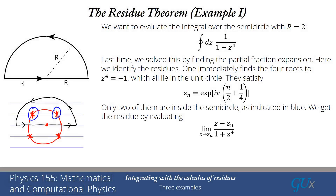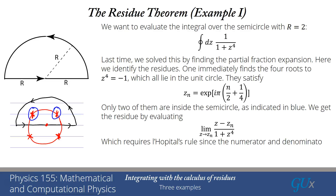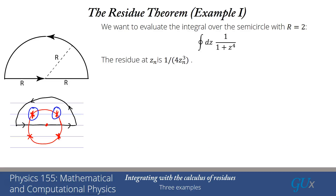As z approaches zₙ, both numerator and denominator go to 0, so we use L'Hôpital's rule. Differentiating the numerator gives 1, and differentiating the denominator gives 4z³. Evaluating at z = zₙ, the residue is just 1/(4zₙ³). We've found the residue.